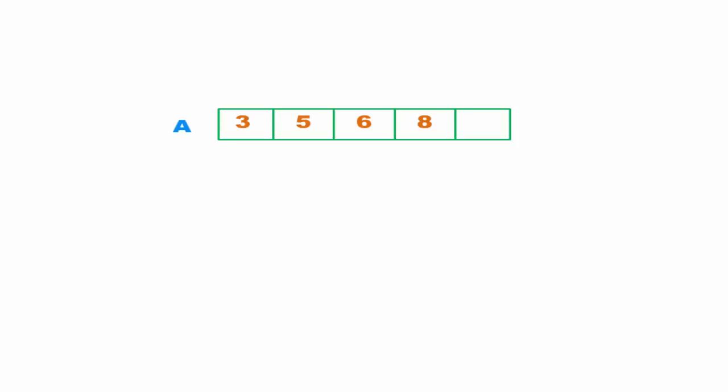Insertion means adding an element to the array. Suppose this is a linear array A. If we want to insert an element to the last position then it's very simple — just put the element to that position. But if we want to insert an element to the kth position of the array, where k is less than the upper bound, then what happens?